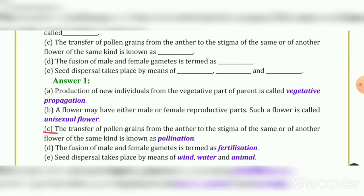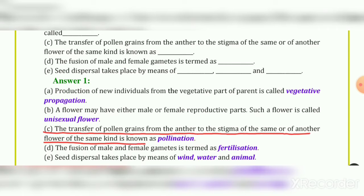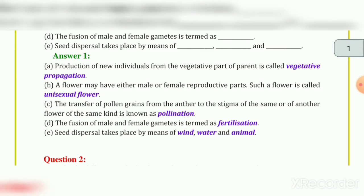C. The transfer of pollen grains from the anther to the stigma of the same or of another flower of the same kind is known as pollination.